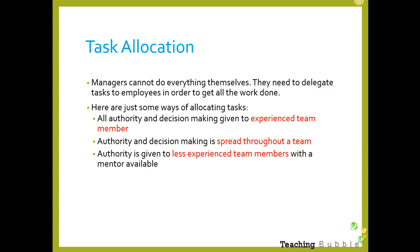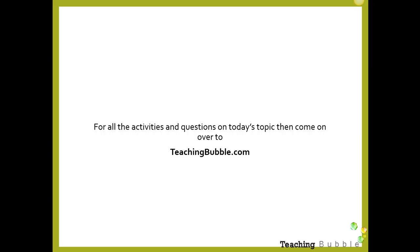Or they can give authority and decision making to less experienced team members, but have a mentor available for them to seek advice from. The reason they would do that is because allocating tasks and delegation is a way of improving employee skills. If they're less experienced, the best way to improve their abilities is to give them tasks that are challenging and that they may not have done before, while still having a mentor available to provide guidance. For all activities and questions on today's topic, come over to teachingbubble.com.